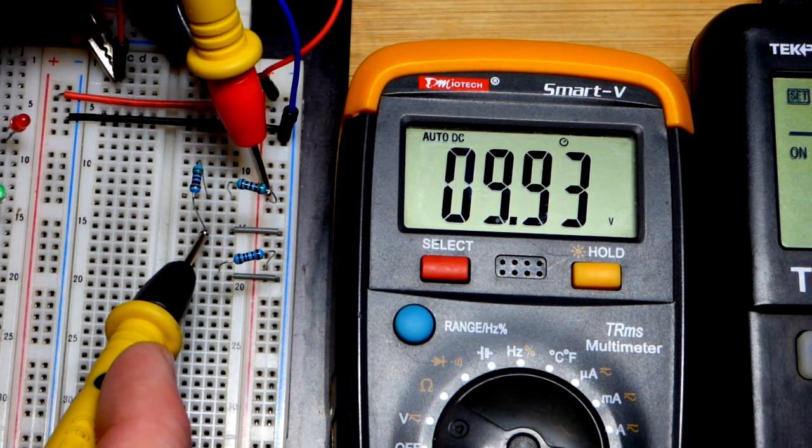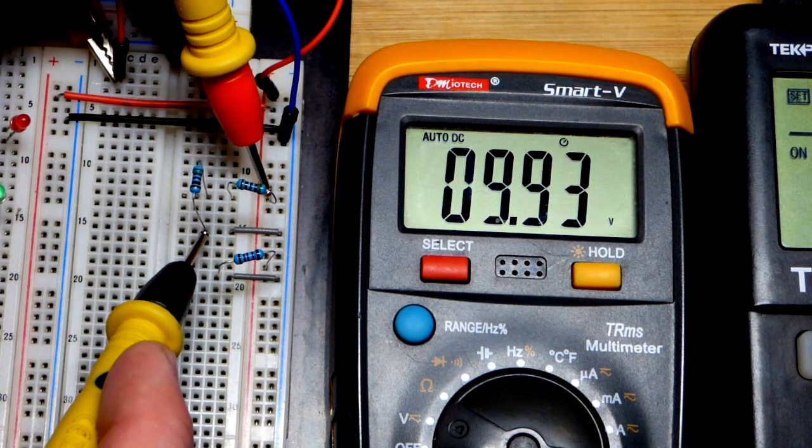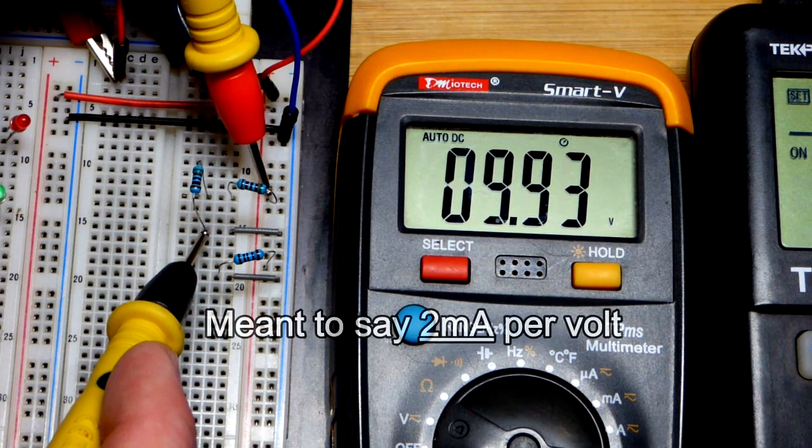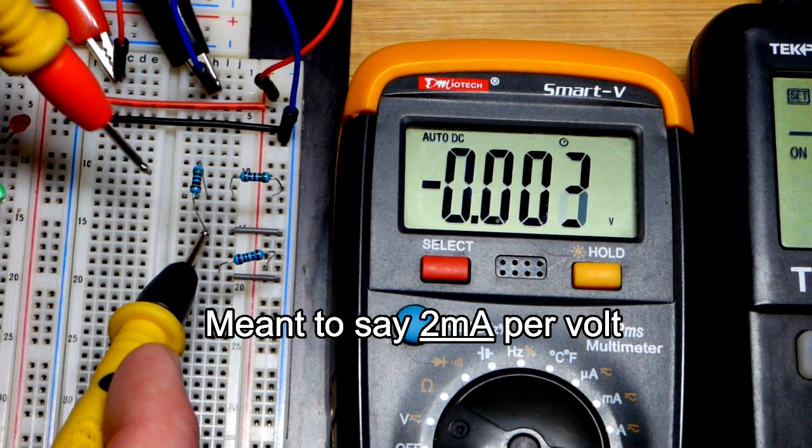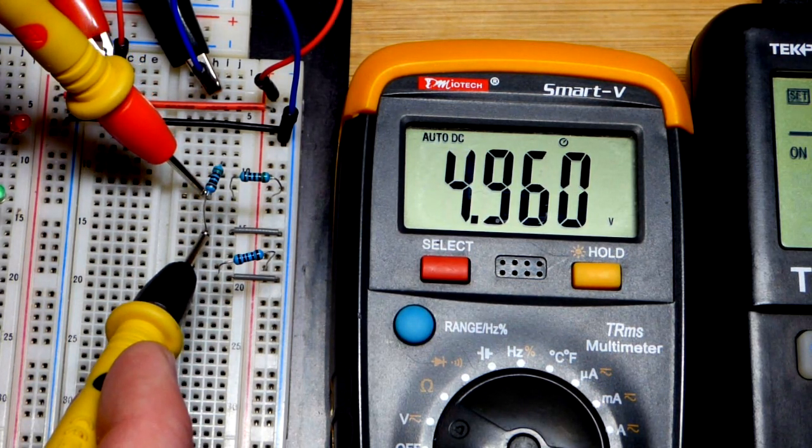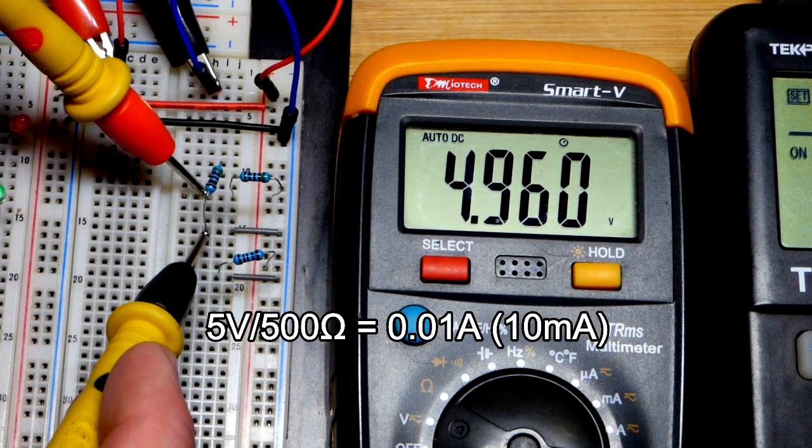And again, we got 10 volts across these two resistors. Now they're 510 ohm resistors, so they're actually going to have about half of a milliamp of current per volt across them. So that was across the two of them though. You can see across just that one we got about five volts, so five volts with about two milliamps per volt is 10 milliamps right there.